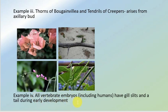Another example is that all vertebrate embryos, including humans, have gill slits and a tail during their early development.